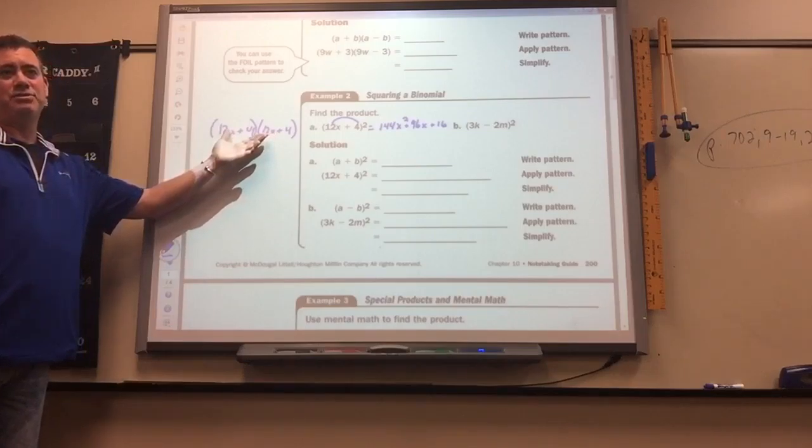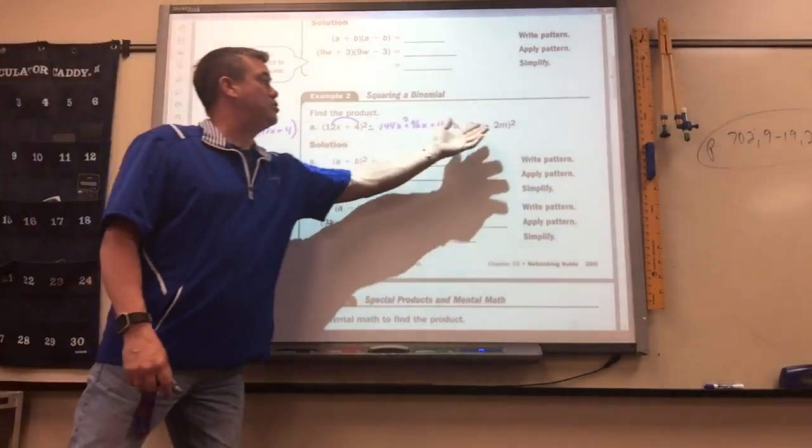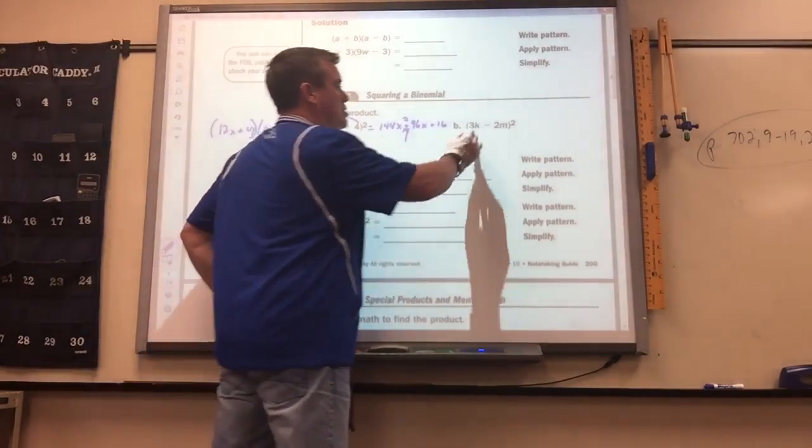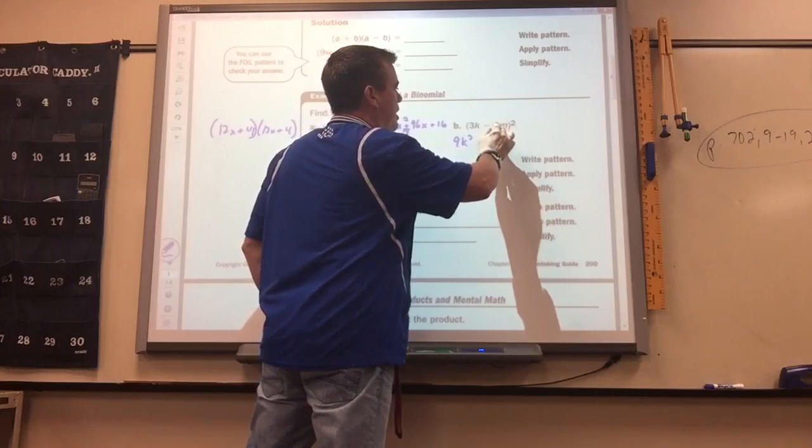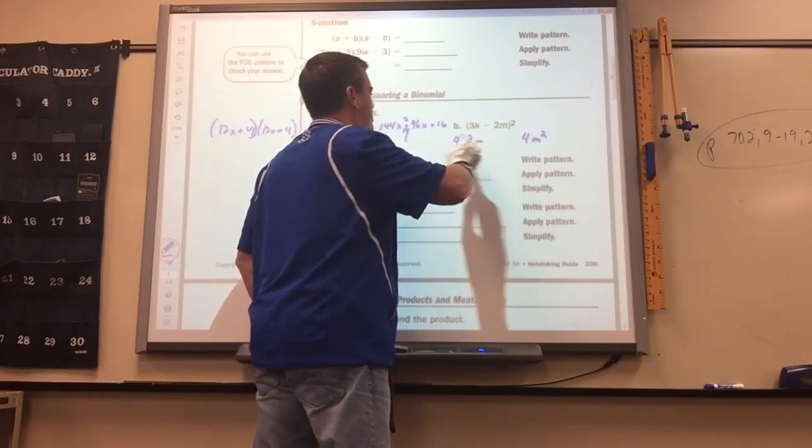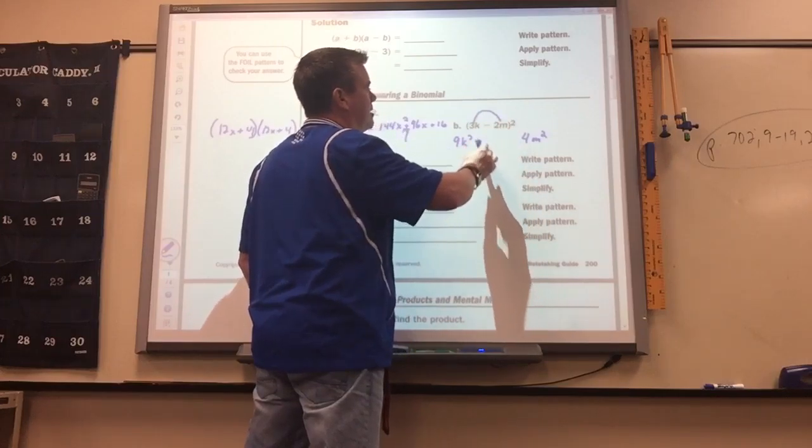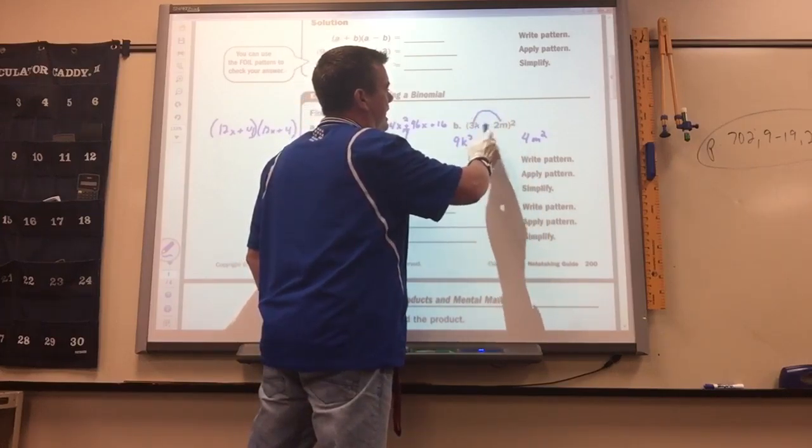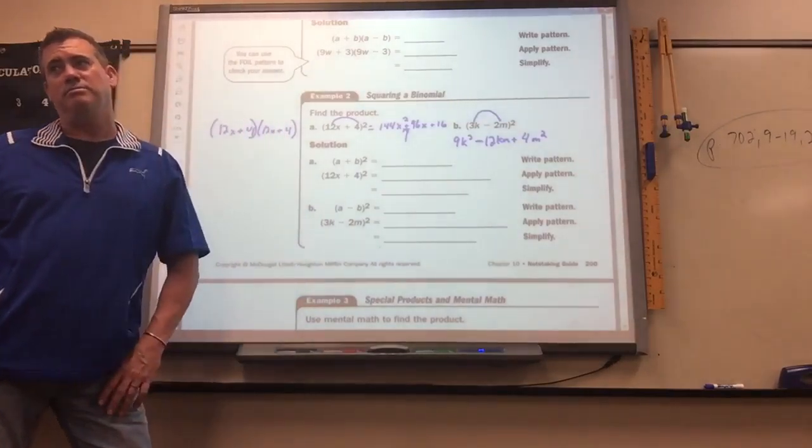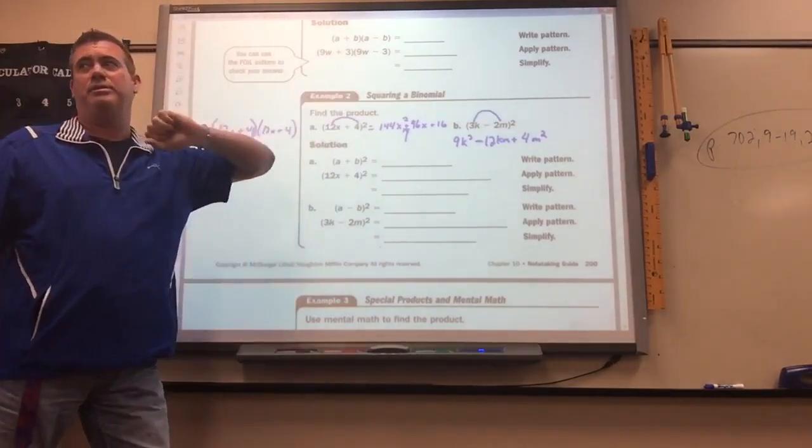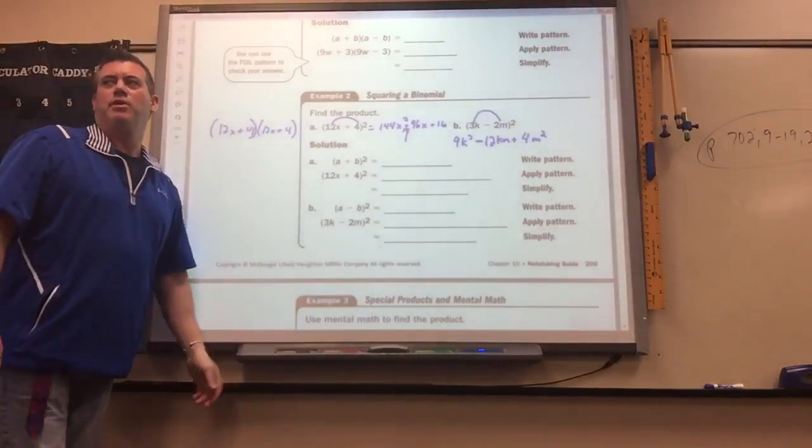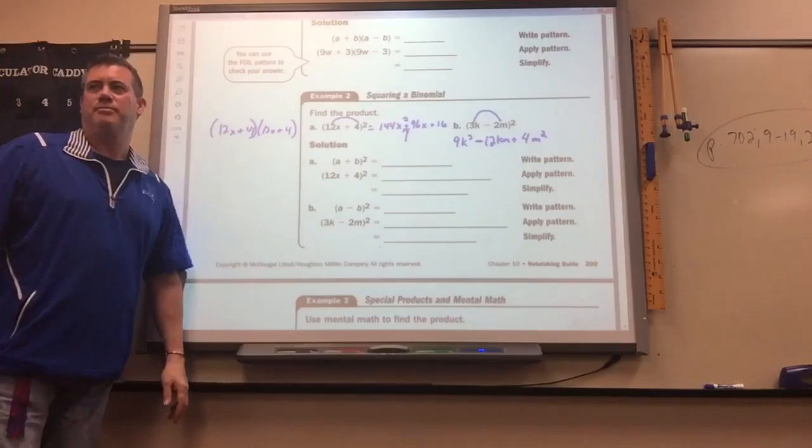You get the same answer doing it like we did in the past two assignments. This one is done exactly the same. The only thing that's going to change is it's not going to be a plus in this spot, it's going to be a negative. So you'd square this, you'd get 9k squared. Square this, you'd get 4m squared. And then the middle term, it's going to be a negative there instead of a positive because this is a negative. Multiply that: 3 times 2 is 6km, and then you've got to double it, so it would be 12km. Not squared, it's just you multiply the two and then double it. So you just square the first and the last.